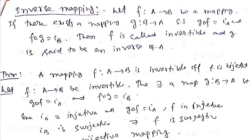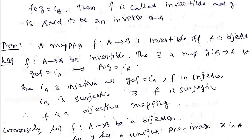What is the criteria for a function to have an inverse mapping? A mapping f: A→B is invertible if and only if f is bijective. To prove this: first, let f be invertible. By definition there exists a mapping g from B to A such that g∘f equals iA and f∘g equals iB, where iA and iB are the identity mappings of A and B.